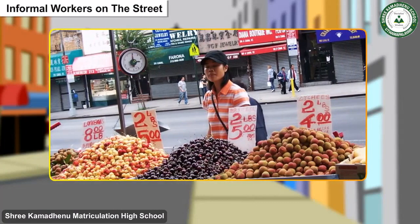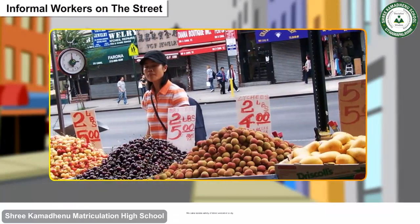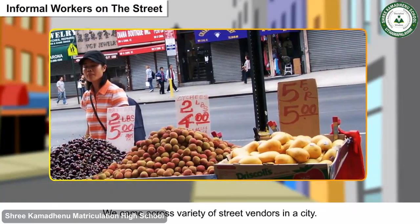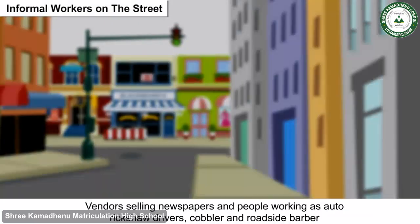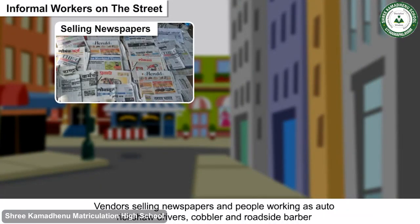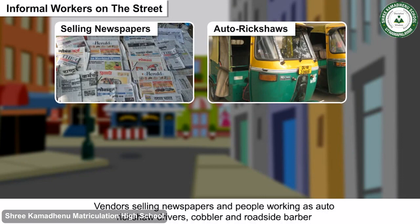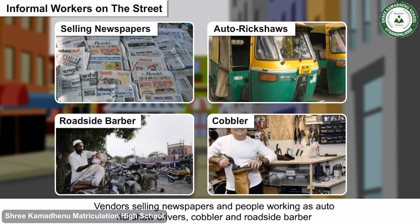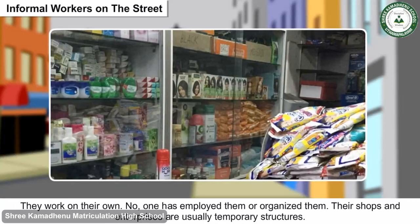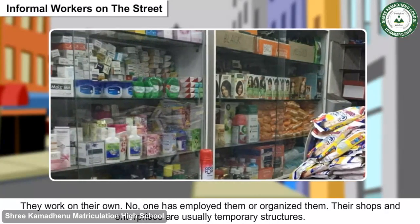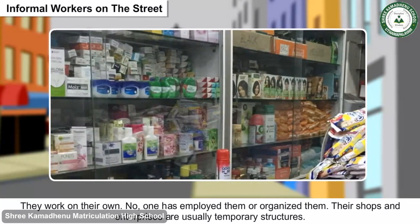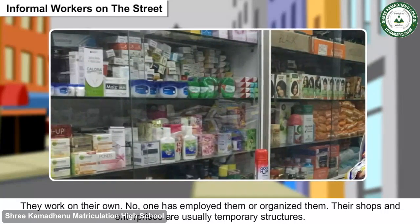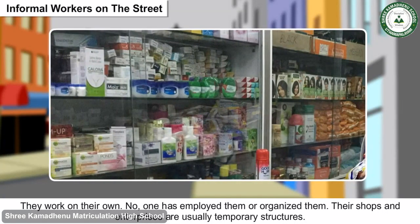Informal workers on the street: We come across a variety of street vendors in a city — vendors selling newspapers, people working as auto rickshaw drivers, cobblers, and roadside barbers. They work on their own; no one has employed or organized them. Their shops and enterprises are usually temporary structures.